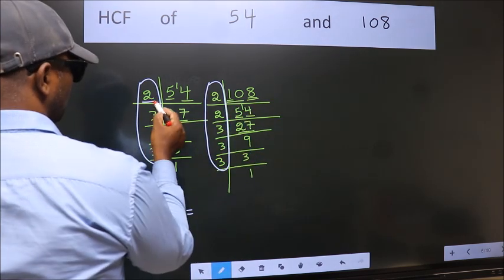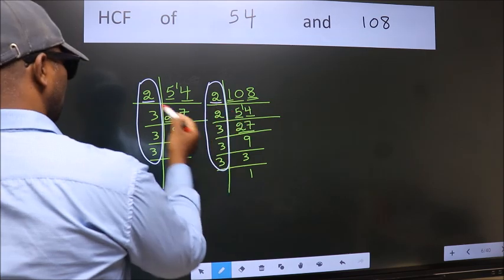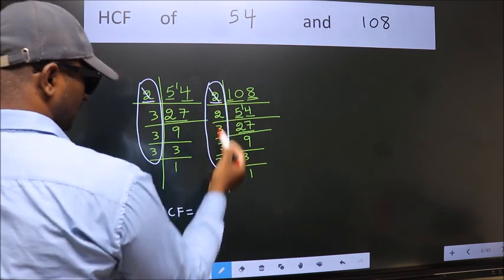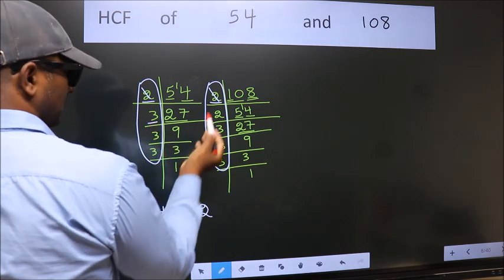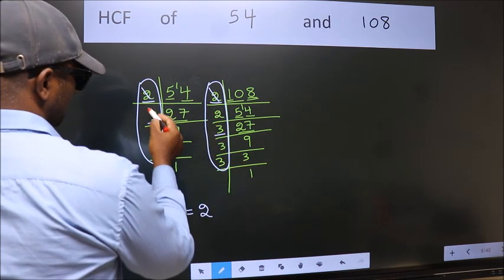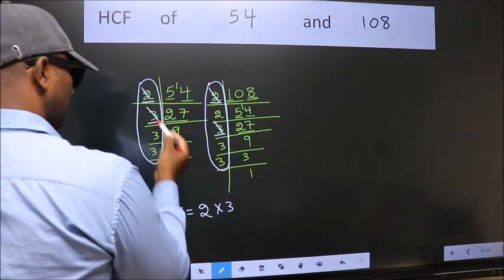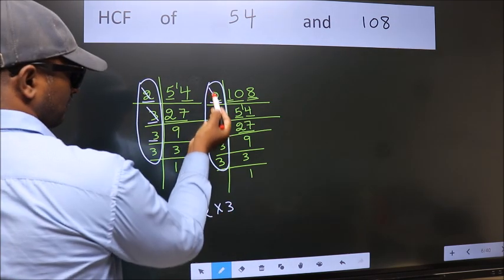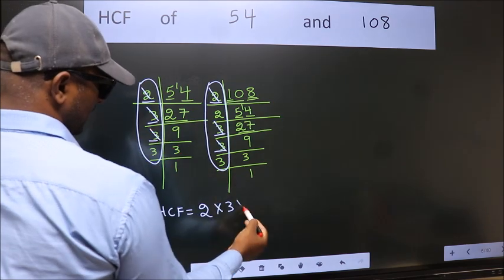Starting with the number 2. Do we have 2 here? Yes. So, cut 2 right here. Next number 3. Do we have 3 here? Yes. So, cut 3 right here. Next number 3. Do we have 3 here? Yes. So, cut 3 right here.